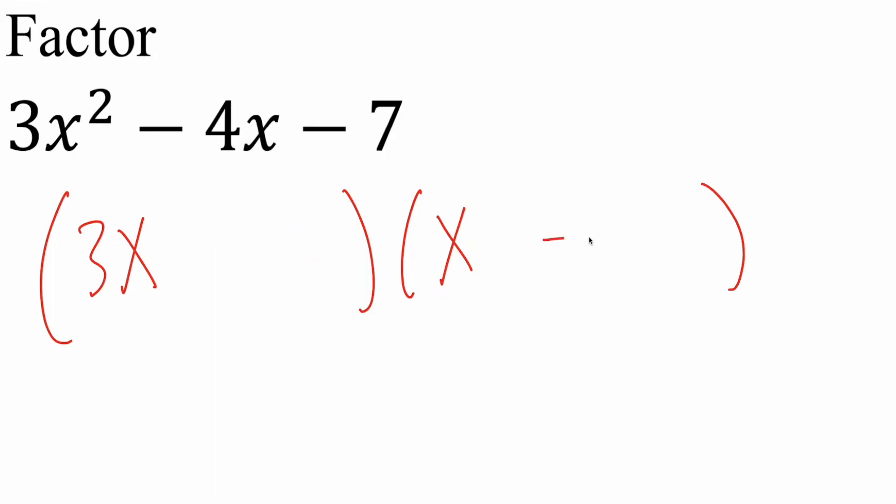So instead let's say we have a positive 1 and a negative 7. So 3x times 1 is 3x, negative 7 times x is negative 7x, and negative 7x plus 3x is in fact negative 4x. And so this right here is our final answer.